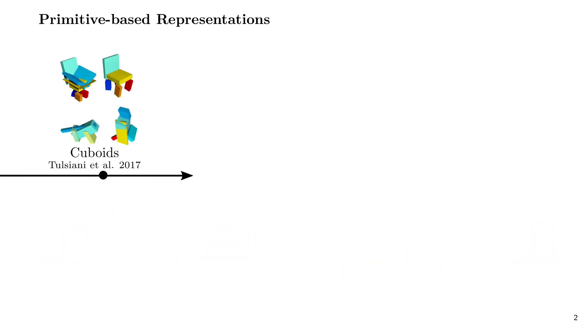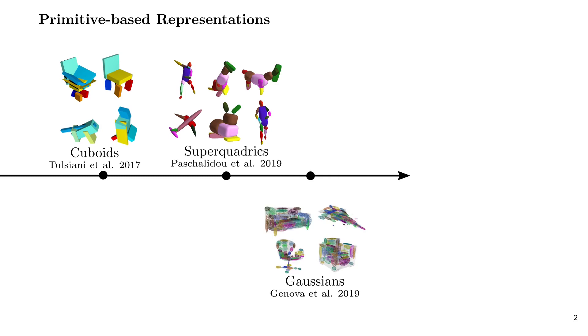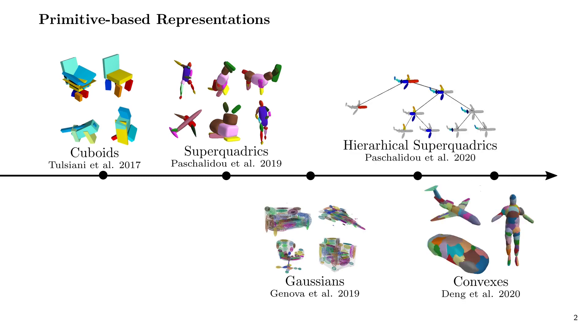Existing primitive-based representations seek to infer semantically consistent part arrangements across different objects and provide a more interpretable alternative compared to more powerful implicit representations. They rely on simple shapes such as 3D cuboids, superquadrics, 3D anisotropic gaussians, or more general convex shapes.